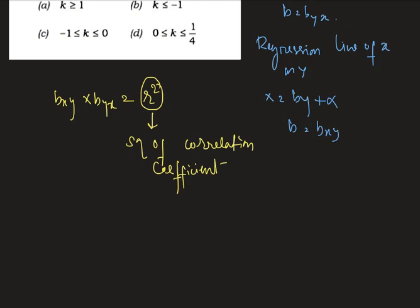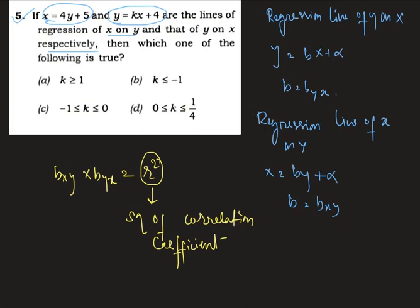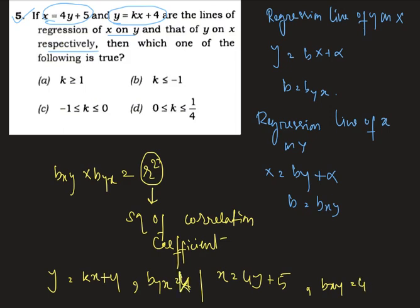Now in this question, the regression line of y on x is y equals kx plus 4, therefore byx equals k. And the regression line of x on y is x equals 4y plus 5, where bxy equals 4.